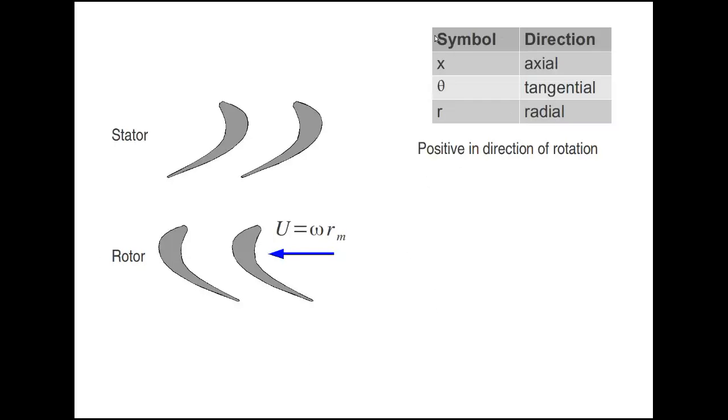We then look at our different symbols for different directions. We have X for the axial direction, Theta for the tangential direction, and R for the radial direction. One important thing to note is that our sign convention is always positive in the direction of rotation.